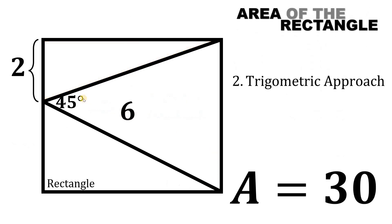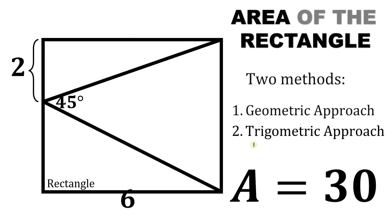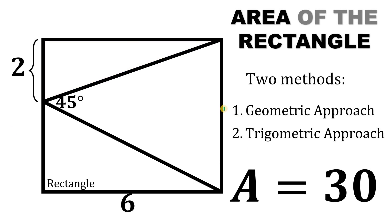So given this figure, using two different approaches, we get that the final answer — the area of this rectangle — equals 30 square units. And as always, we are done.